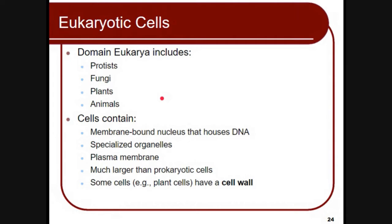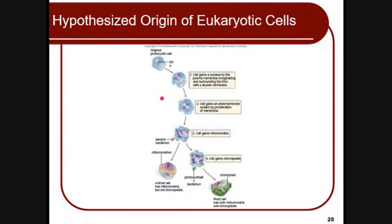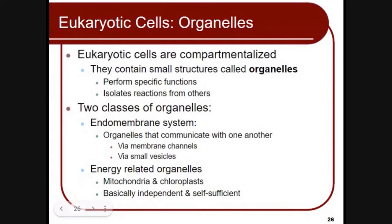Some cells, such as plant cells, have a cell wall. In this diagram, you can see how the original prokaryotic cell evolved to become a eukaryotic cell over time. The original prokaryotic cell gains a nucleus via the plasma membrane and then becomes more complex with more complex structure. Eukaryotic cells are compartmentalized, meaning they contain small structures called organelles.